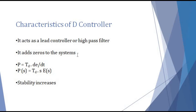The D-controller adds zeros to the system. As discussed in the last lecture, if a zero is added to the system, stability will increase; if a pole is added, stability will decrease. A pole means S is in the denominator; a zero means S is in the numerator. Since the final expression is P(S) = TD · S · E(S), the S here is in the numerator — it is a zero. In this way, the D-controller adds a zero to the system, and hence stability increases.